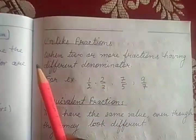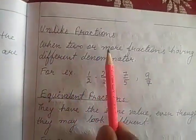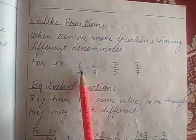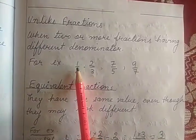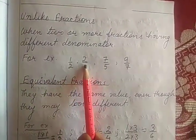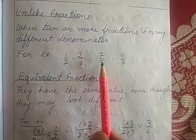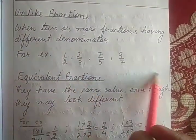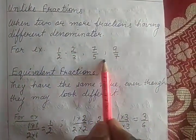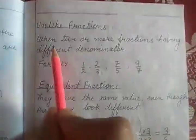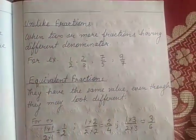Unlike fractions: when 2 or more fractions have different denominators. For example: 1 upon 2, 2 upon 3, 7 upon 5, 9 upon 7 — denominators 2, 3, 5, 7 are all different. So it is an unlike fraction.